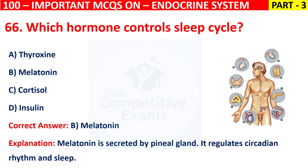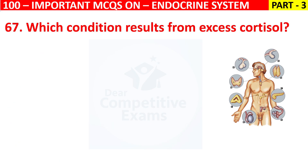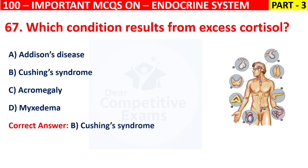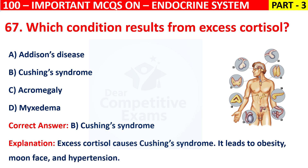Question 67: Which condition results from excess cortisol? Your options are Addison's disease, Cushing's syndrome, Acromegaly, or Myxedema. The correct answer is B, that is Cushing's syndrome. Excess cortisol causes Cushing's syndrome. It leads to obesity, moon face, and hypertension.